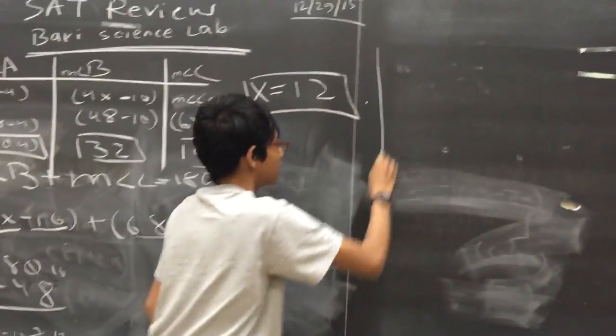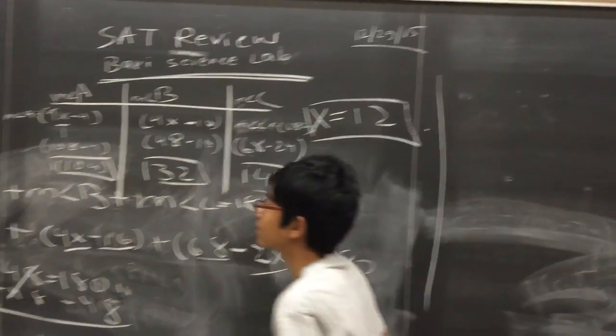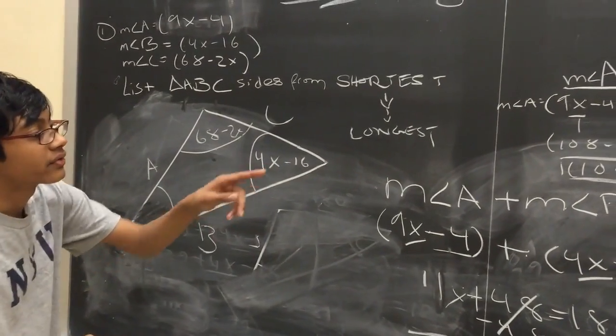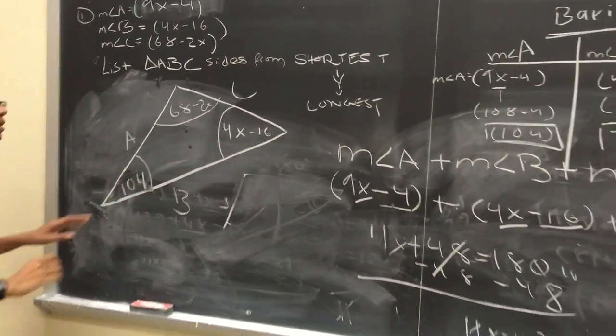Now that we know that these angle measures are correct, what we're going to do is draw our own triangle, or we can go back to our own triangle. We know that measure of angle A to be 104. So we already know this triangle is obtuse.